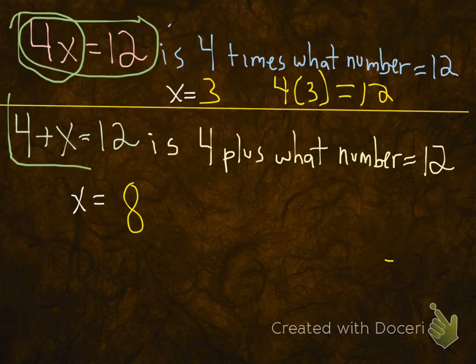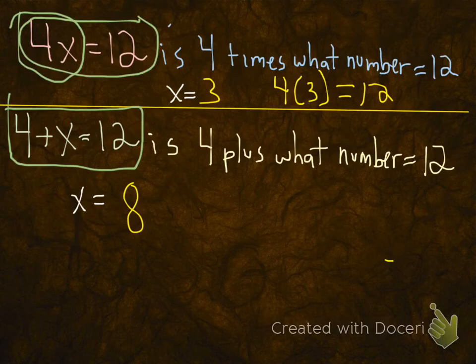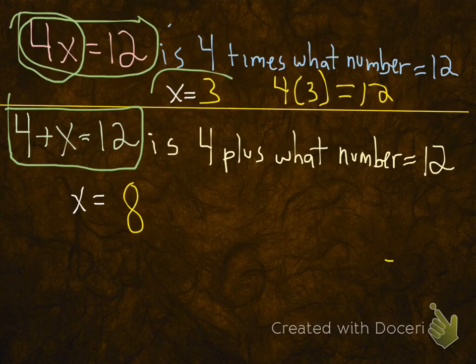The bottom equation here, 4 plus x equals 12, is a very different equation, because now we're looking at addition. 4 plus what number? It's going to equal 12. So we see our top equation, we have a solution of 3, because 4 times 3 is 12. Our bottom equation, you're looking at a solution of 8, because 4 plus 8 will give us 12.